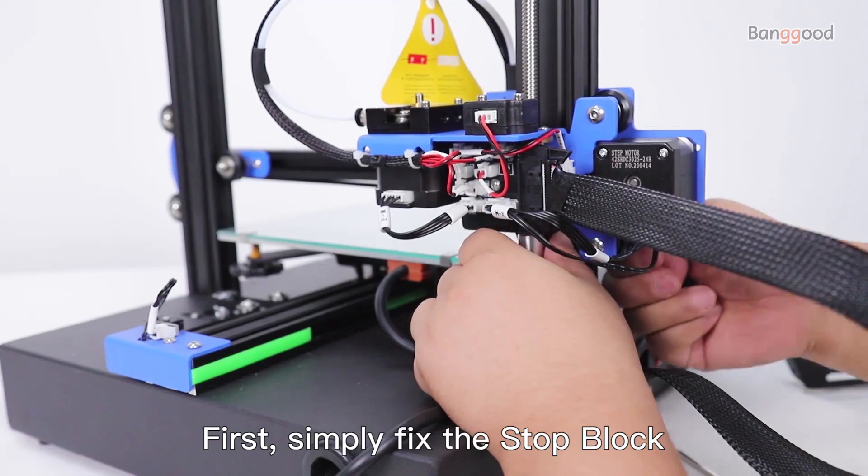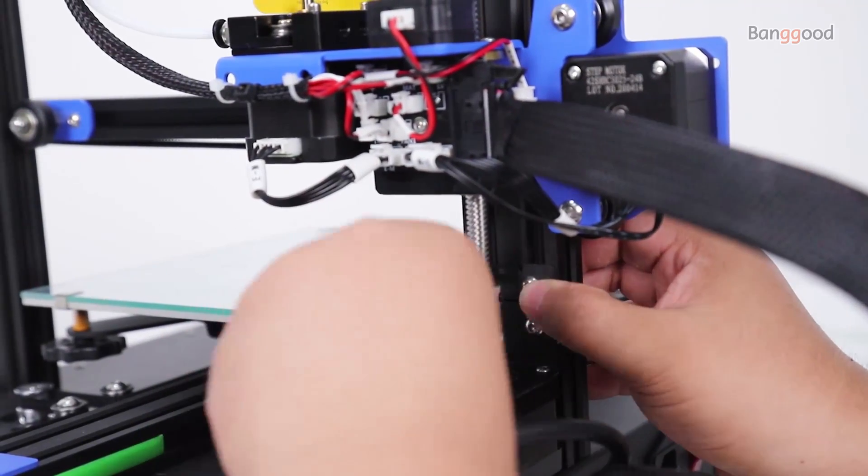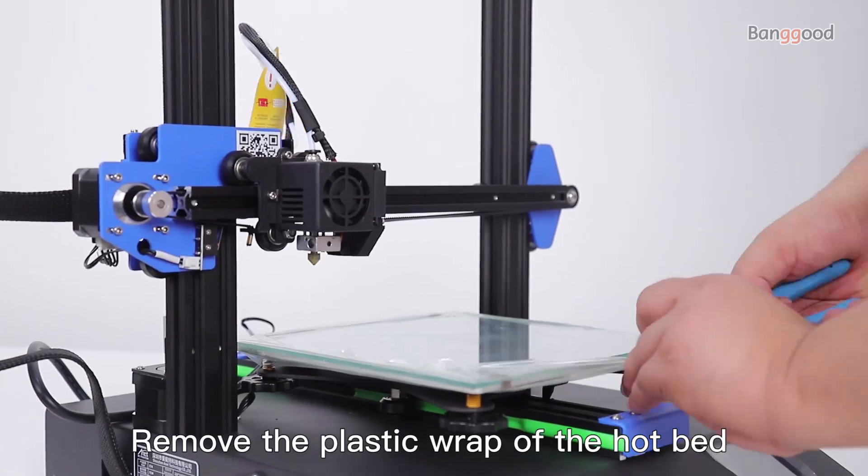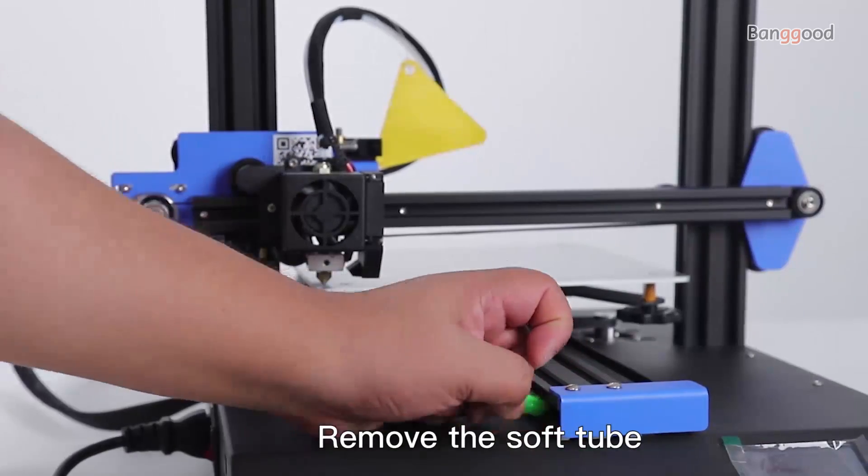First, simply fix the stop block. Remove the plastic wrap from the hotbed and remove the protective tube.